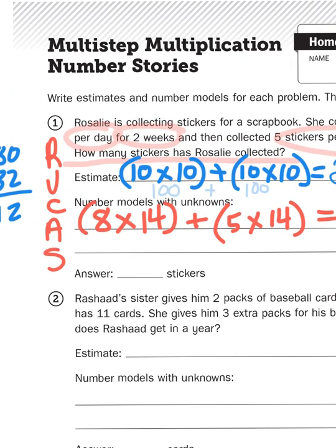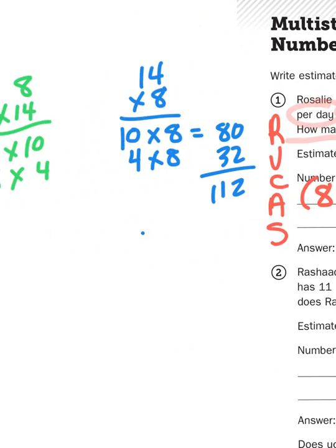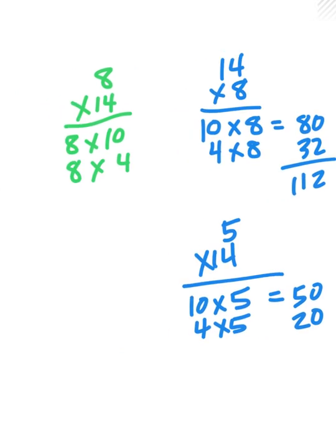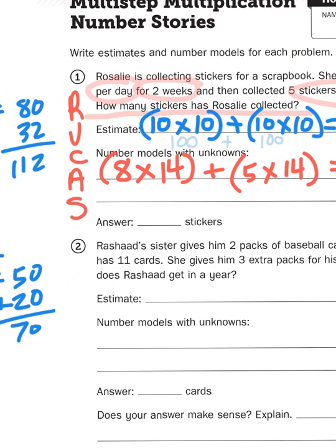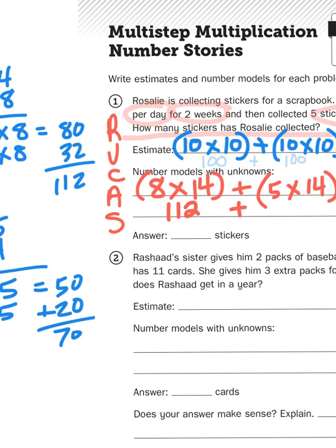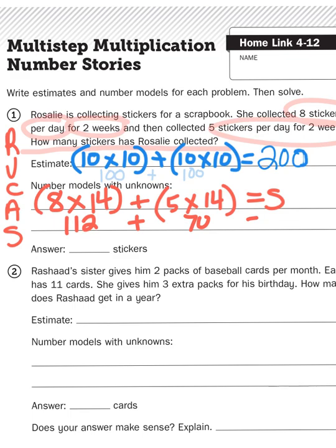And now I have to do the same thing for five times fourteen. I would set up the problem like so. Ten times five and four times five. Since I know ten times five is fifty, and four times five is twenty, I get my second total as being seventy. So now what I have to do is I take eight times fourteen, that product, which is one hundred and twelve, and I'm going to add that to seventy. And that gives me my total.